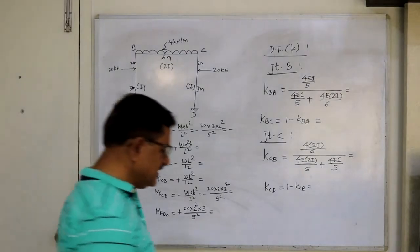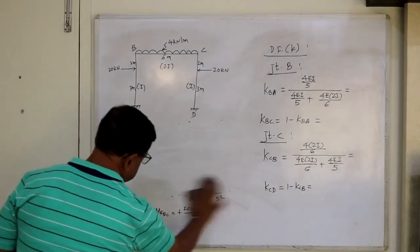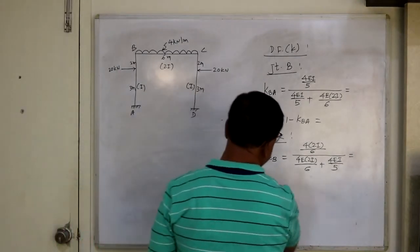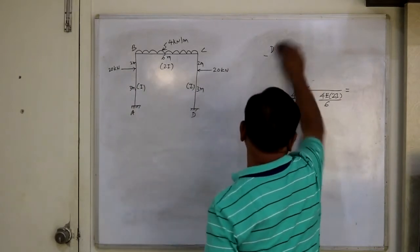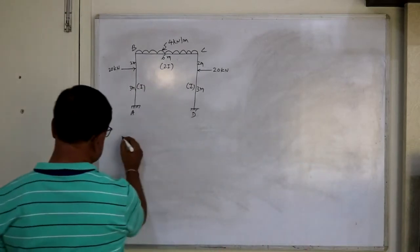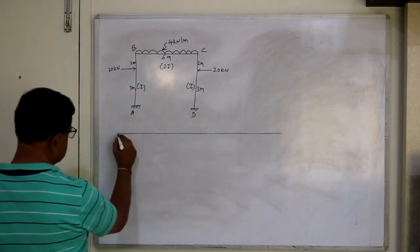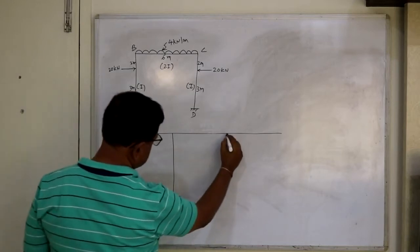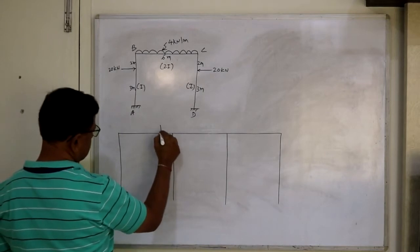After getting the distribution factors, prepare the moment distribution table — that is the third step. You know how to prepare the table. The frame is opened out like a continuous beam and the moment distribution table is prepared exactly similar to that for a continuous beam. Set up columns for supports A, B, C, and D.